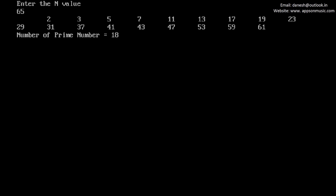These are the prime numbers from 1 to 65. There are a total of 18 prime numbers. They are: 2, 3, 5, 7, 11, 13, 17, 19, 23, 29, 31, 37, 41, 43, 47, 53, 59, 61.